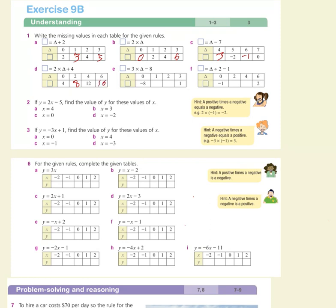This time we multiply triangle by 3 and then take 8: 1 times 3 is 3, take 8 gives minus 5, and so on to minus 2. Then divided by 2, take 1: 2 divided by 2 is 1, take 1 is 0; 4 divided by 2 is 2, take 1 is 1.